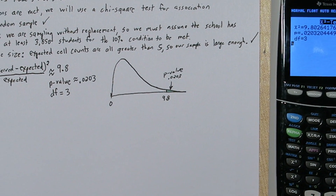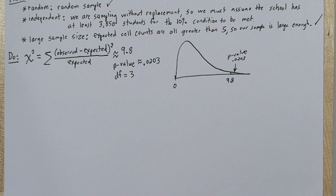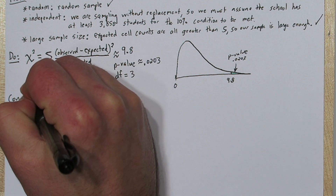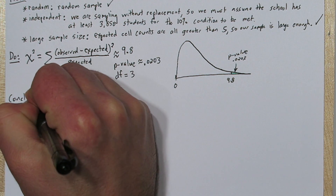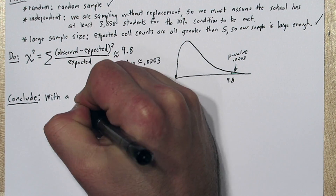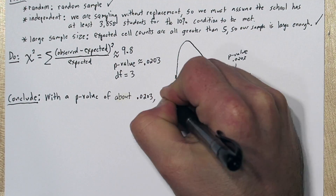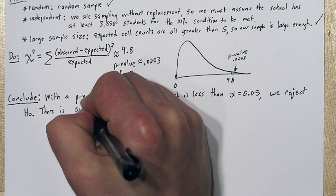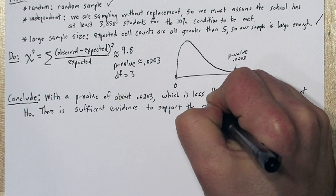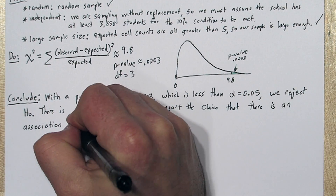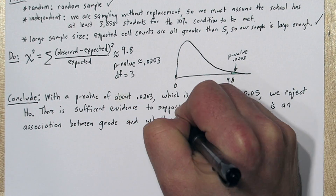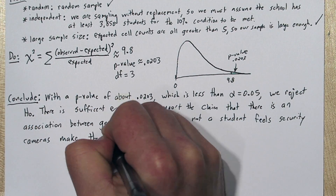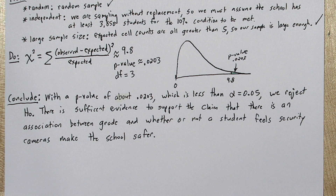For the conclude step: if the null hypothesis is true, the probability of seeing this much association in our sample is about 2%, which is low, so we reject the null hypothesis. With a p-value of about 0.0203, which is less than alpha at 0.05, we reject the null hypothesis. There is sufficient evidence to support the claim that there is an association between grade and whether or not a student feels security cameras make the school safer.